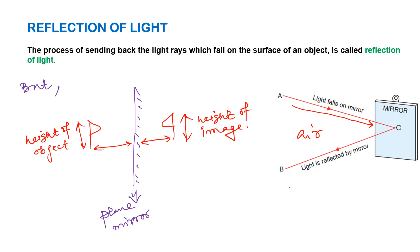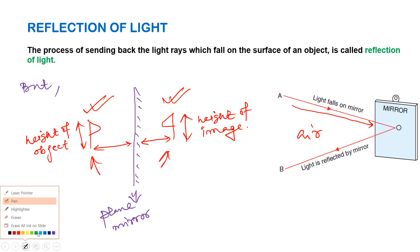A plane mirror has some properties. When an object P is placed in front of the mirror, you get an image, and you can see that the right-hand side of the object appears on the left-hand side of the image, and the left-hand side appears on the right-hand side. This property of image formation in a plane mirror is known as lateral inversion.